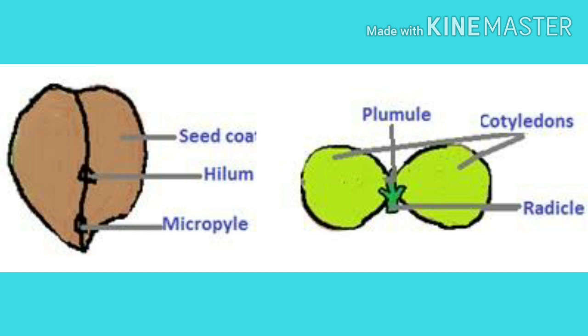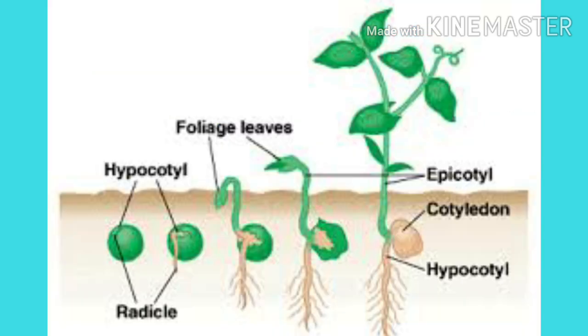One end of the embryo axis bears the radicle and the other end bears the plumule. The radicle, when elongated, gives rise to the primary root, whereas the plumule gives rise to the aerial shoot.